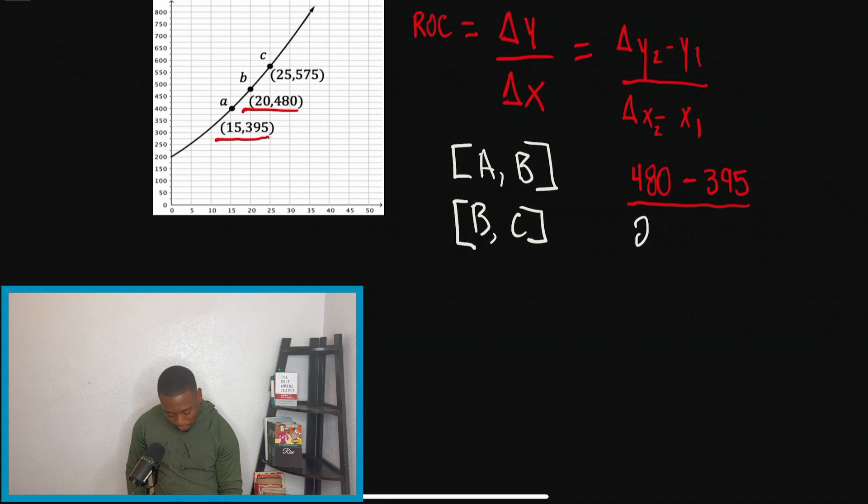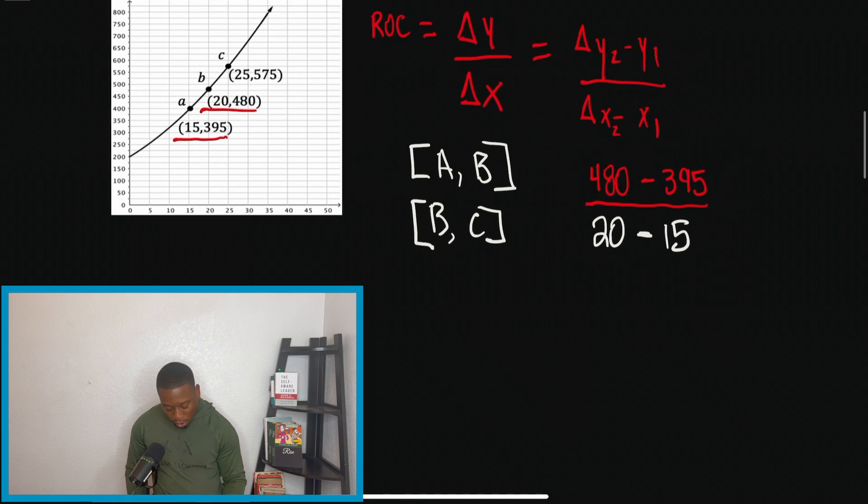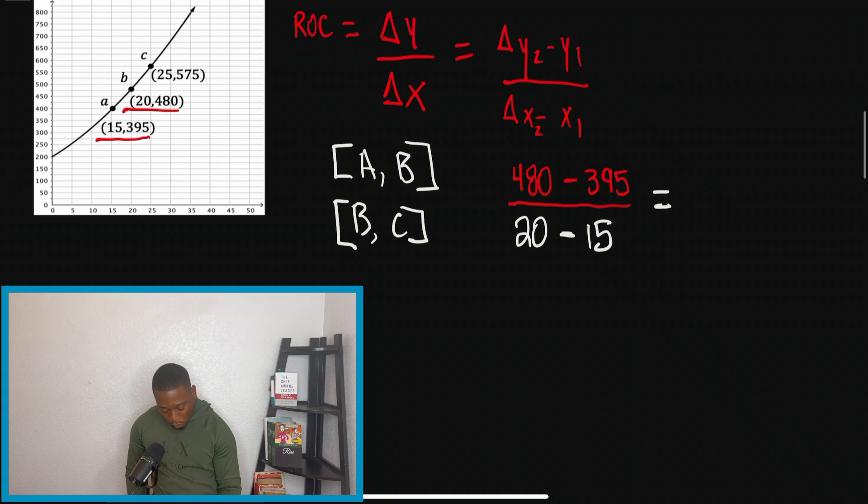All right. So now we go to the bottom. And like I said, we have X2 minus X1. So we're going to simplify now. And once we simplify, we get 85 over 5. And this just simplifies basically to 17.